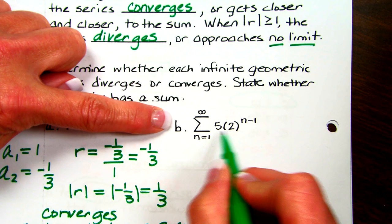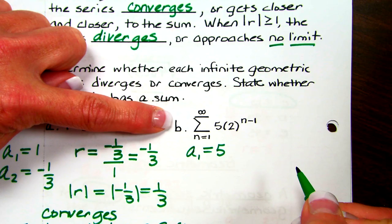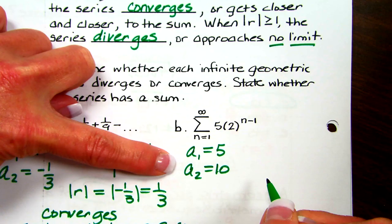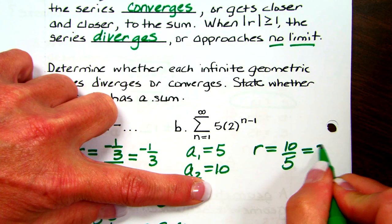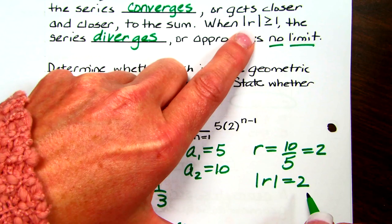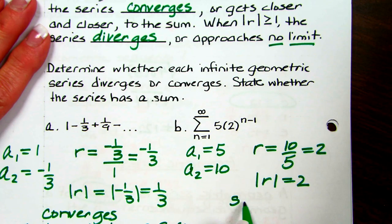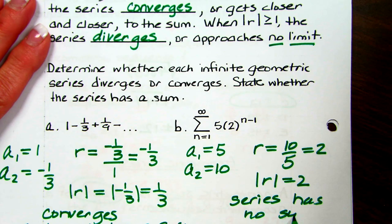For the next one, substitute n=1 to find the first term: 1 minus 1 is 0, so the first term is 5. Plugging in 2 for the second term gives 5 times 2, so the second term is 10. R would be 10 divided by 5, so R is 2. The absolute value of R is still 2. Since the absolute value of R is greater than or equal to 1, the series diverges — it approaches no limit, so this series has no sum.